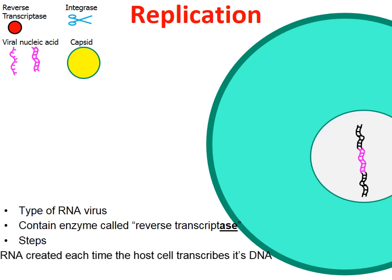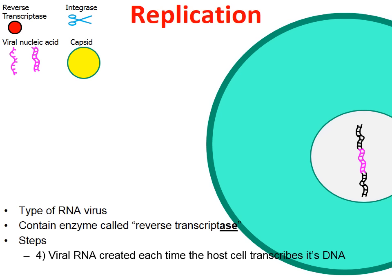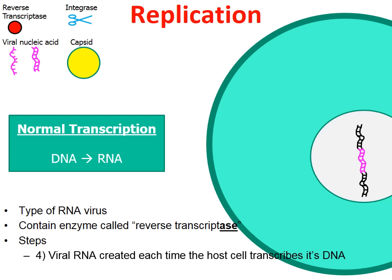This creates a combination of host cell DNA and viral DNA known as a provirus. Viral RNA will be created each time the host cell transcribes its DNA. Inside the host cell are enzymes that direct the normal process of transcription — using DNA to make a molecule of RNA. Through this normal transcription process, the cell's enzyme makes a copy of viral RNA instead of cell RNA.